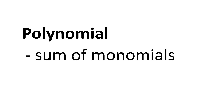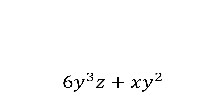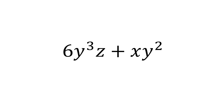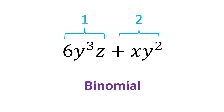For example, 6y cubed z plus xy squared is a polynomial, because it is a sum of 2 monomials. A special name for a polynomial with 2 monomials is binomial.